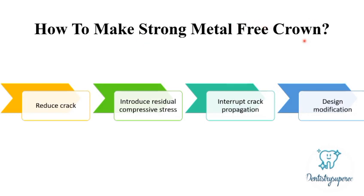To achieve a strong metal-free crown, researchers developed certain methodologies: reducing crack formation, introducing residual compressive stress to interrupt crack propagation, and modifying the design. These will be covered in the next session. In this session we covered the composition of feldspathic ceramic and what led to the need for ceramic modifications. Thank you all for your patient listening.